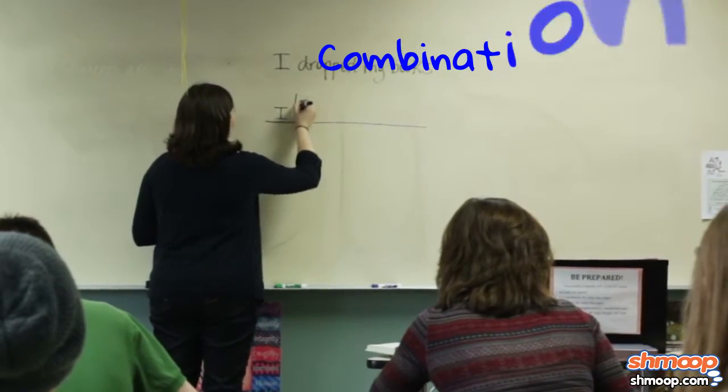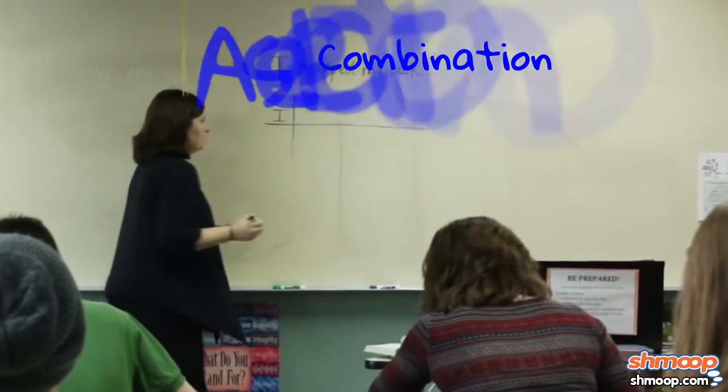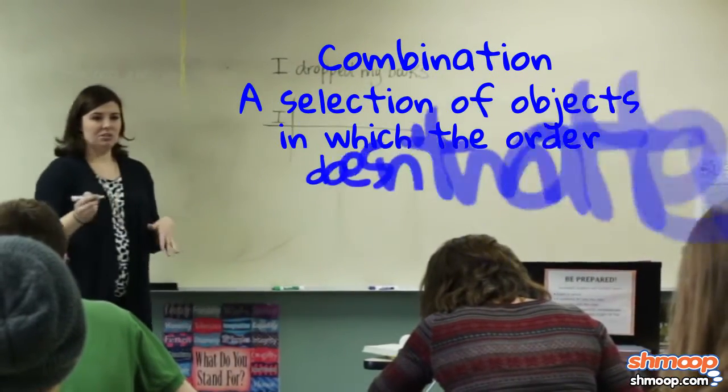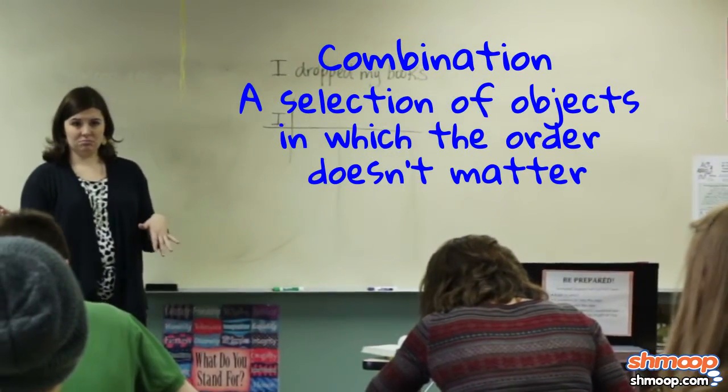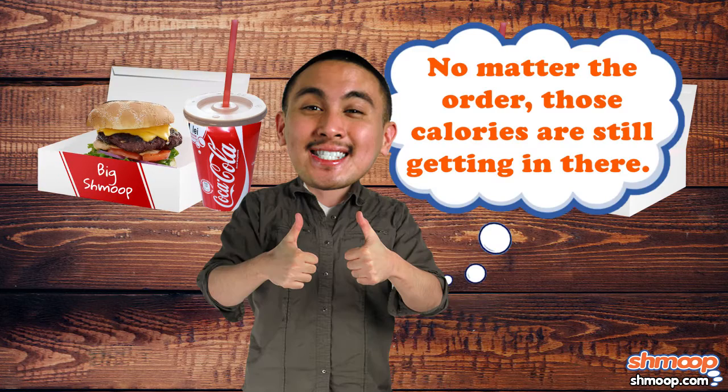First of all, a combination is a selection of objects in which the order doesn't matter. In Clark's case, it doesn't matter if he has the Big Shmoop and soda, or soda and Big Shmoop.